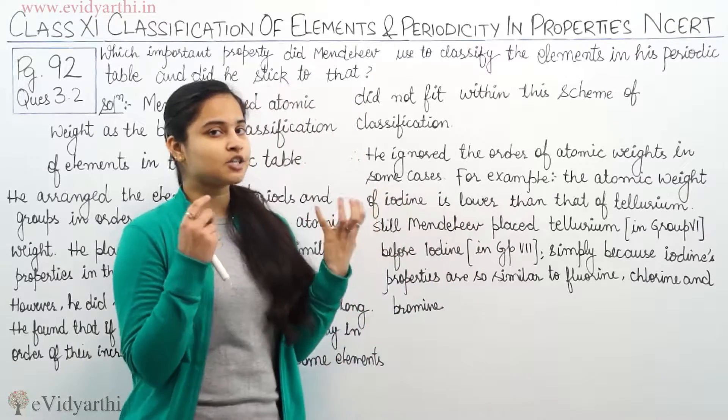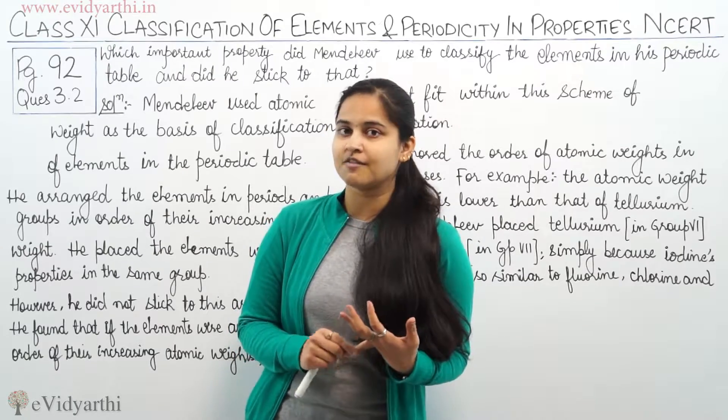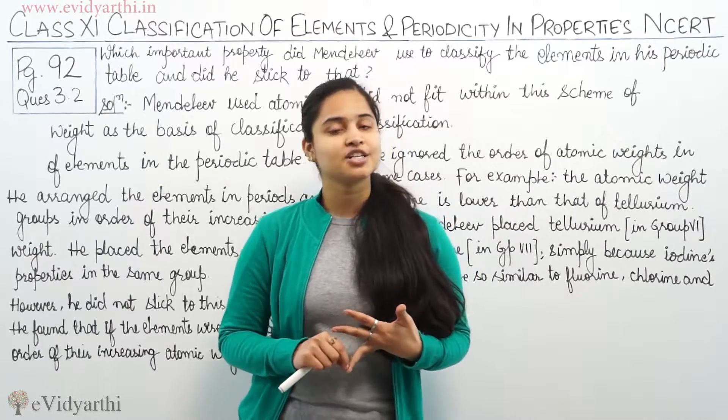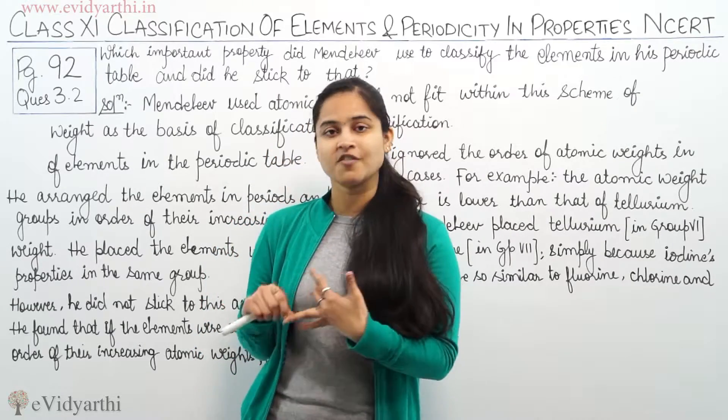So the basis of classification of elements in periodic table according to Mendeleev was the atomic weight. And secondly, he did not stick for long towards this property of atomic weight.